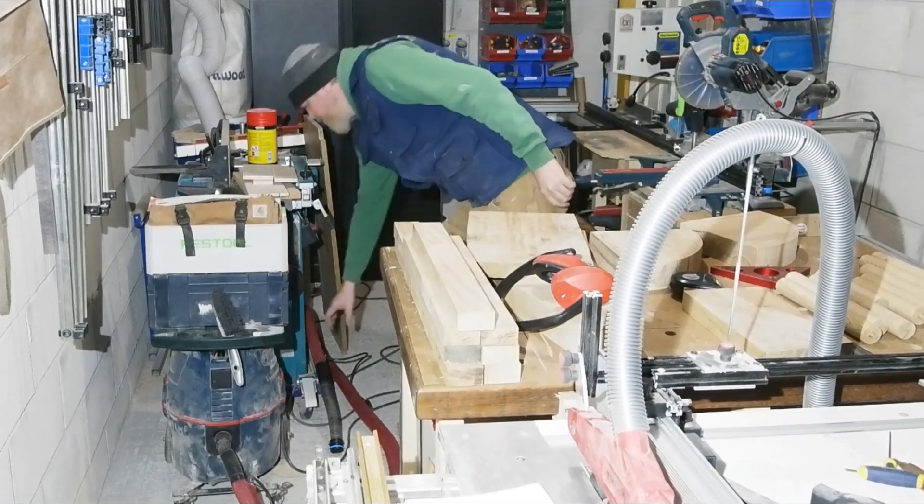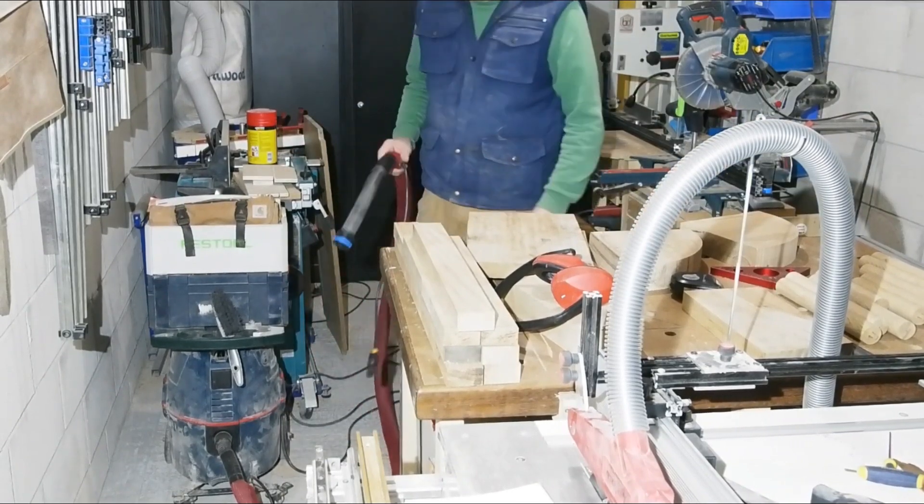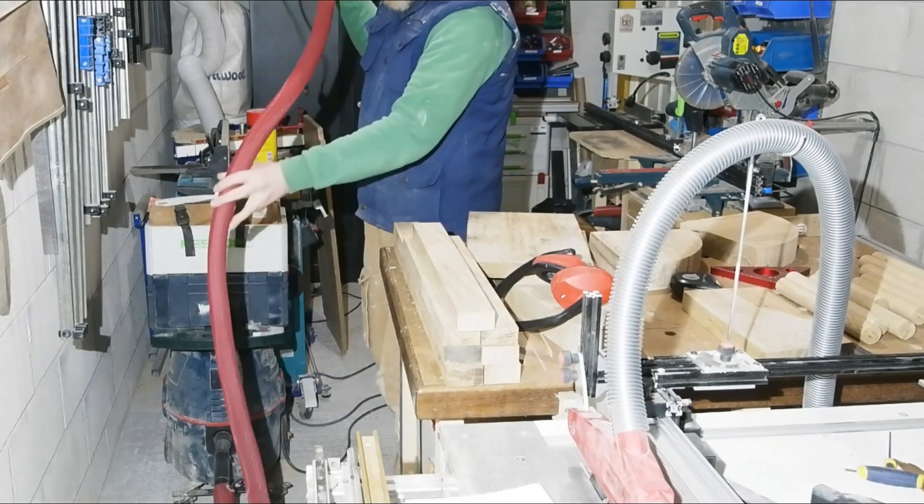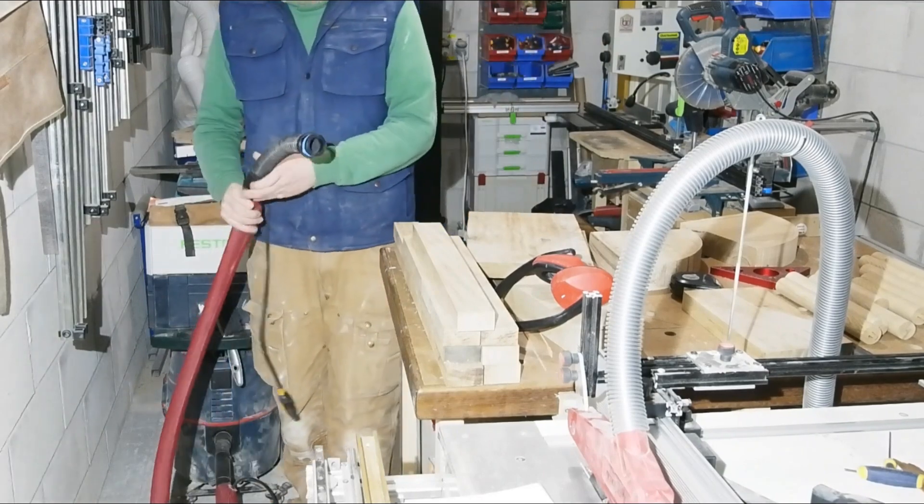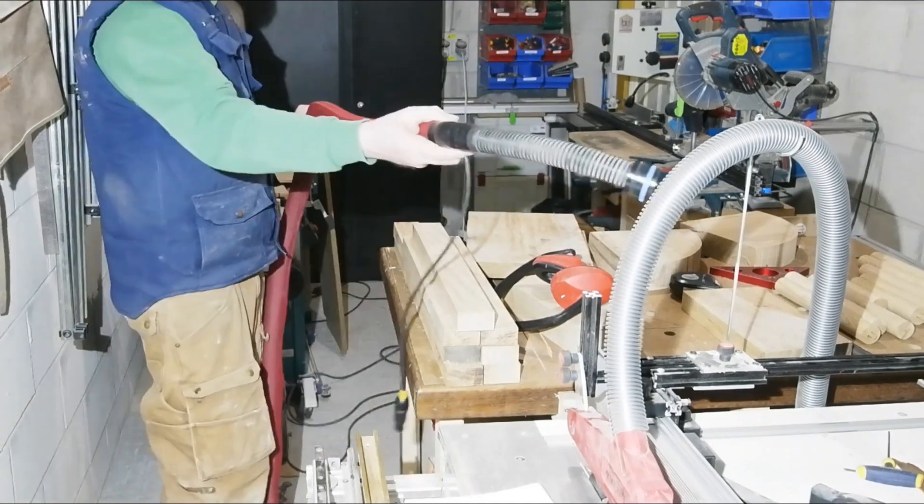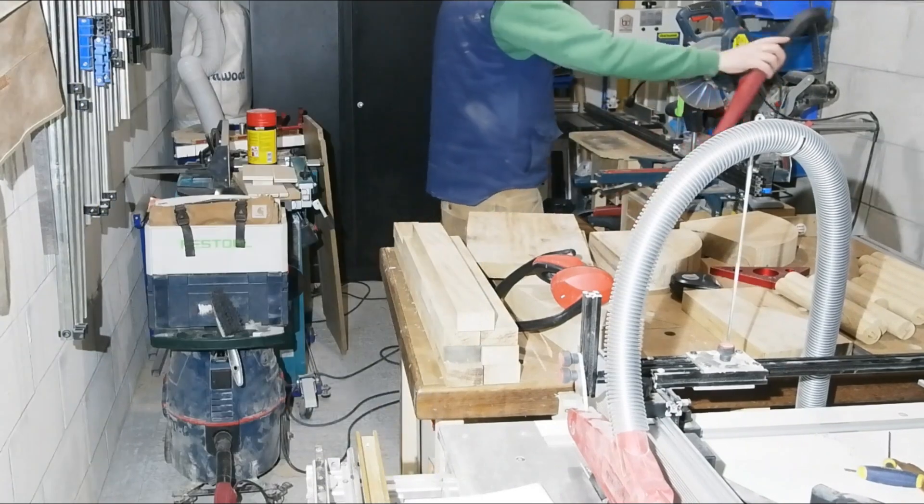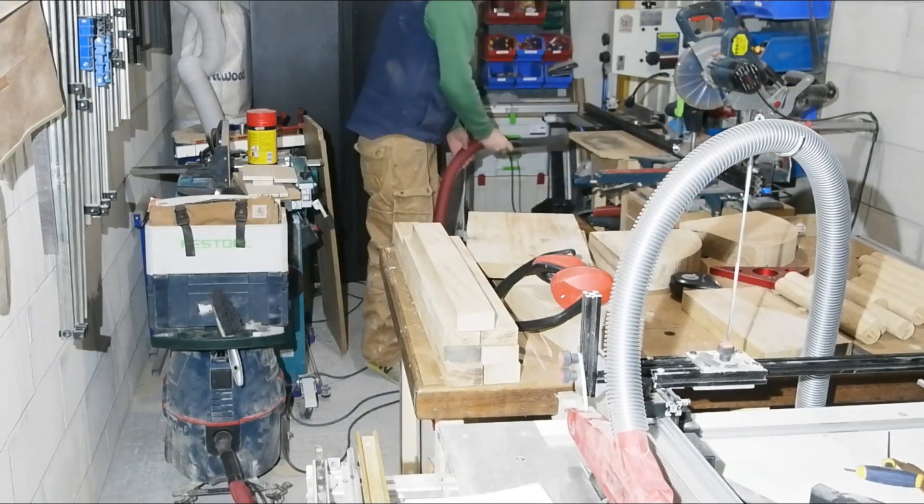All other extraction in here is taken care of by this old Bosch vac, a modified GAS-20L. From there, the 3m hose can service the table saw, the router table and workbench, the mitre saw, and the bandsaw.